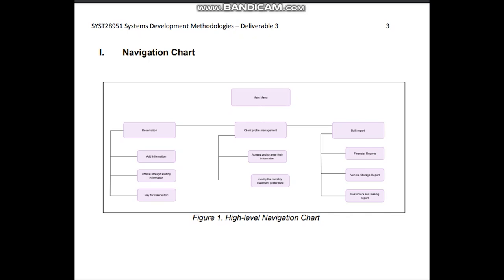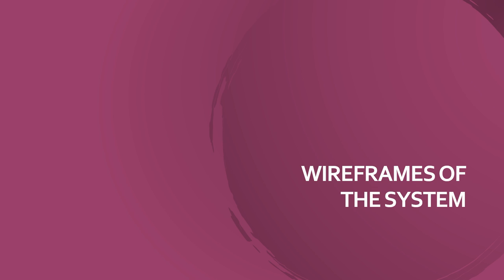Now I'm going to explain the structure of our application. As you can see in the navigation bar, our system is divided into three parts: Reservation, which is used to get vehicle information and pay for a reservation; Client Profile Management, where a user can change and access information and modify their monthly statement preferences; and lastly Bureau Report, where the manager can access a financial, vehicle, and customer report. The next section covers the wireframes of the system.